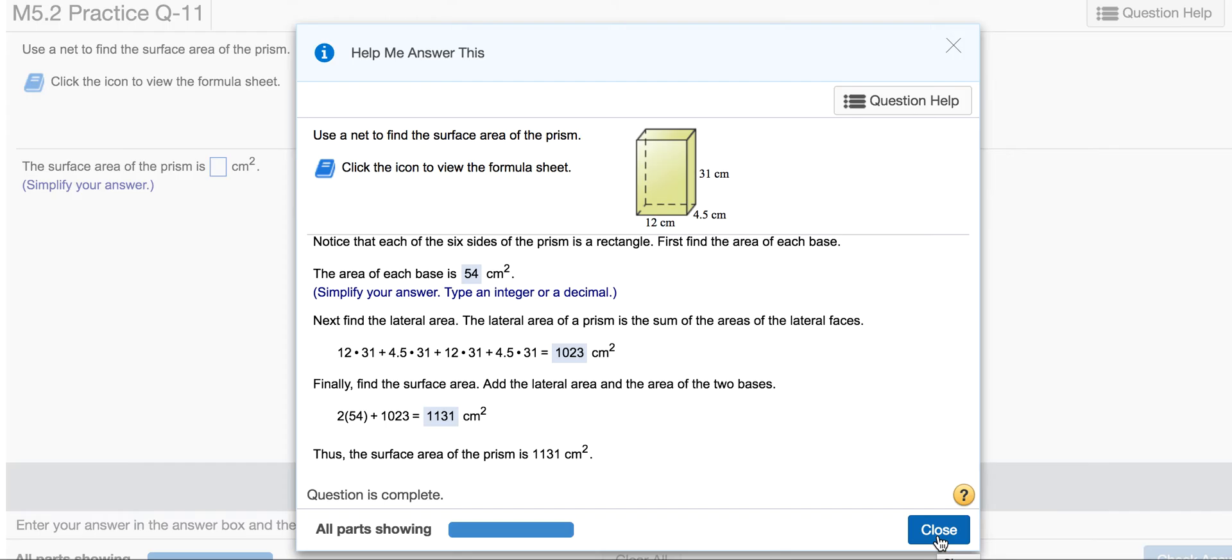Finally, to find the surface area, plug in our numbers. 2 times 54 is 108. Add 108 to 1,023, and you get 1,131. That's how you solve the surface area of the prism using the net.